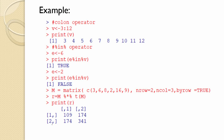The next is the %in% operator. If we want to check whether element 6 is present in vector V, we assign E the value 6 and use print E %in% V. The output is true because 6 is present in vector V. In the same way, if we set E to 2 and check E %in% V, the result is false because 2 is not present in vector V.